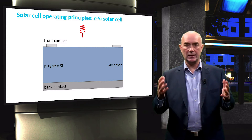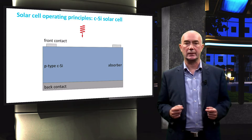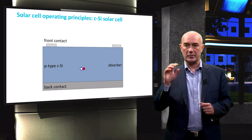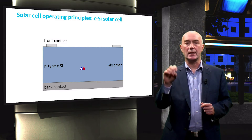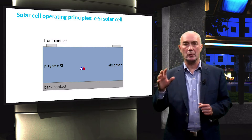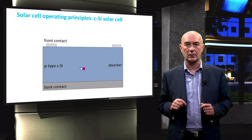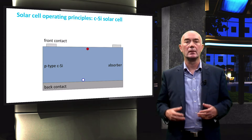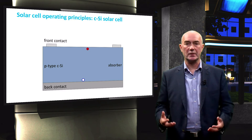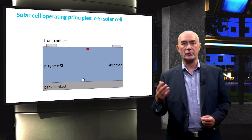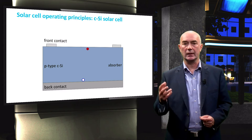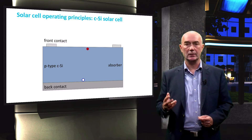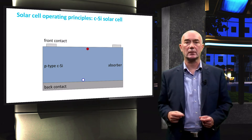When the P-type crystalline silicon is illuminated, light is absorbed in the wafer. The absorption of the light results in electron-hole pair generation. We would hope that the electron and the hole will separate spontaneously, and one of the charge carriers — for example, the electron — will move towards the front and the other, the hole, to the back electrical contact.